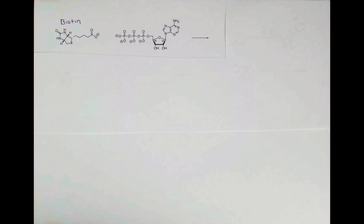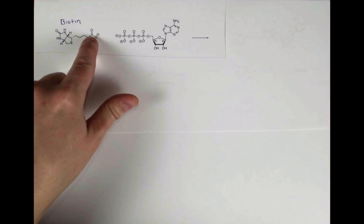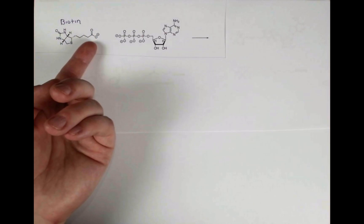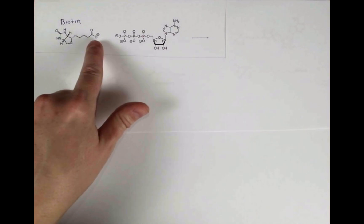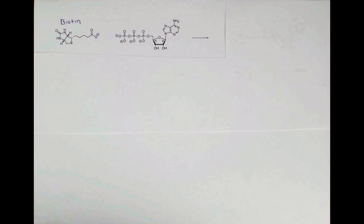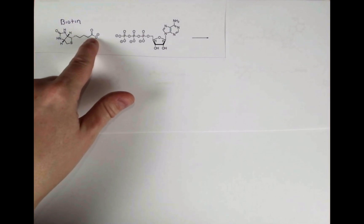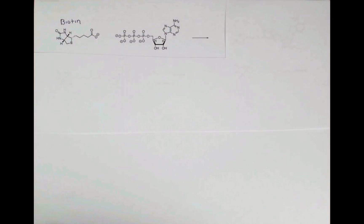To begin this process, biotin must first become linked to a lysine residue on the enzyme, and it'll link up right here. However, this carboxylate at biological pH, at pH 7.4, is going to be deprotonated and in this anionic form. So it's really difficult for a nucleophile, a lysine residue, to come in and just attack this carboxylate.